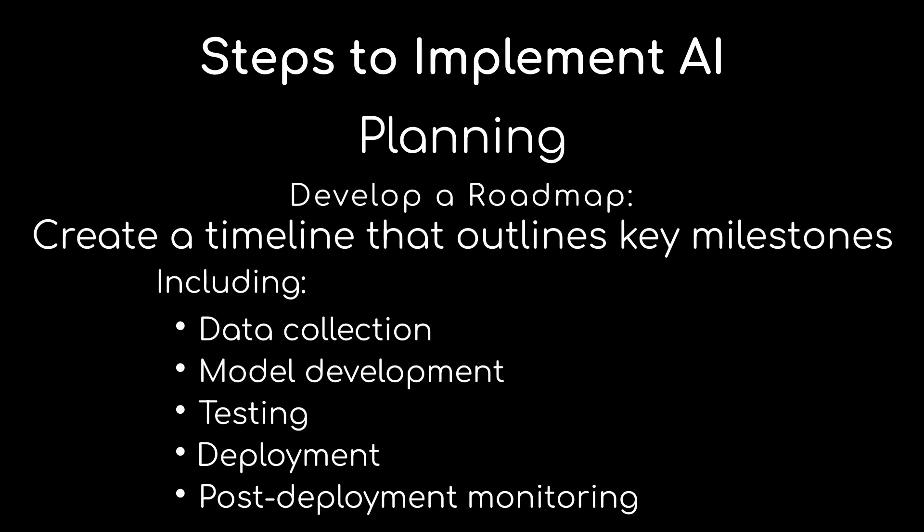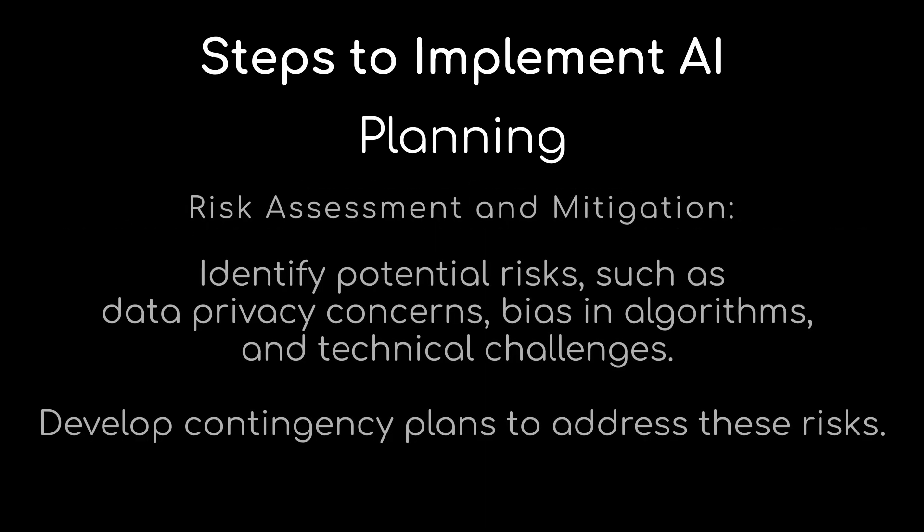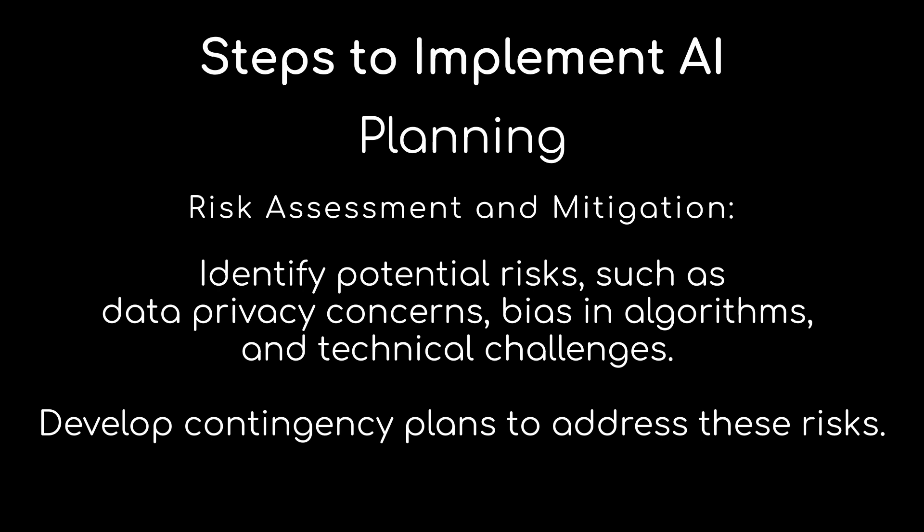Next, we're going to develop a roadmap — creating a timeline that outlines our key milestones, including data collection, model development, testing, deployment, and post-deployment monitoring. Then we're going to look at risk assessment and mitigation. This is a big one. We need to identify potential risks such as data privacy concerns, bias in algorithms, or technical challenges. We're going to develop a contingency plan to address those risks and make sure we're putting a safe product in front of our employees, our customers, wherever it's going.